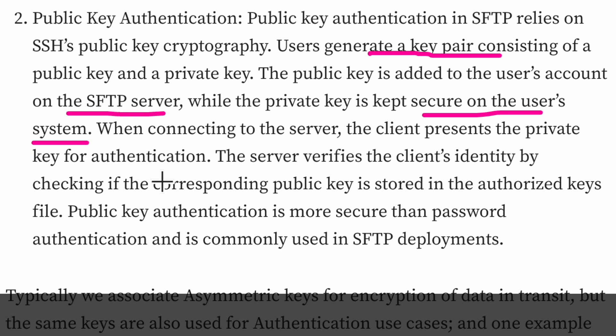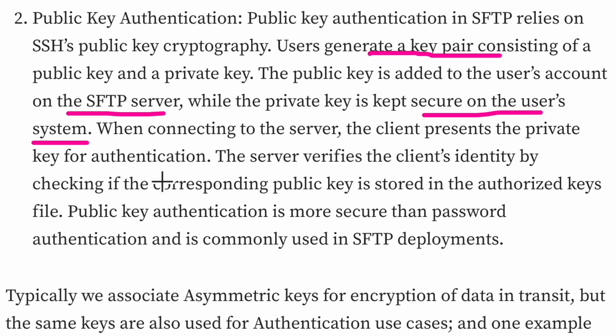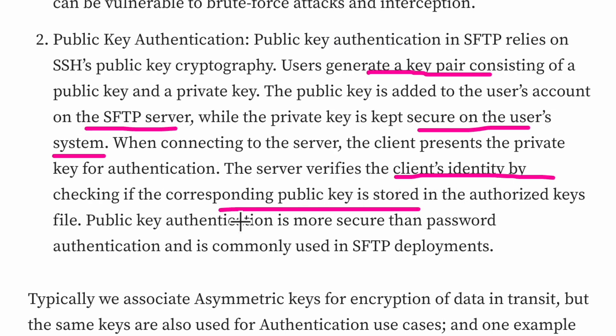When the user is connecting to the server, the client presents the private key for authentication. The user facilitates the private key to the client which is connecting to the server. The client has the private key on the user's end, and on the server is the public key. Because it's a key pair, it is used for authentication. The server verifies the client identity by checking if the corresponding public key is stored in the authorized key file.